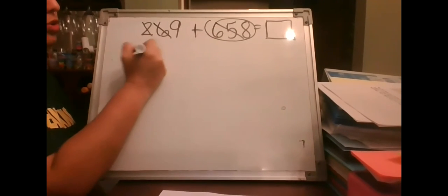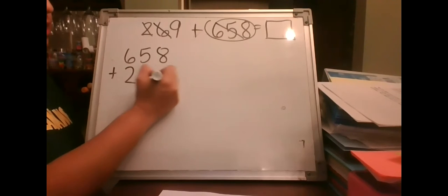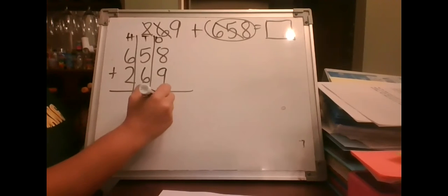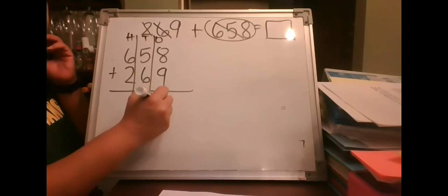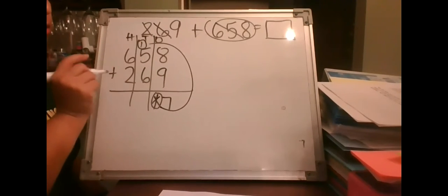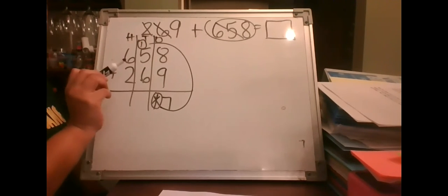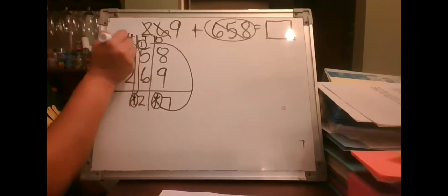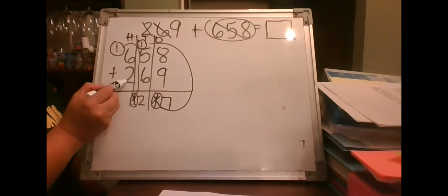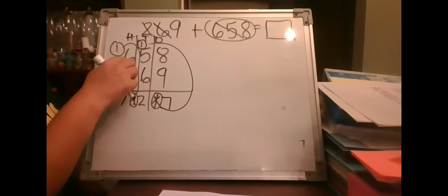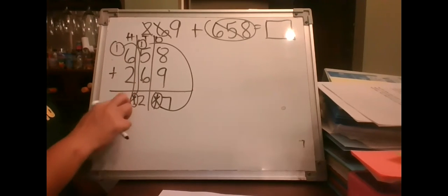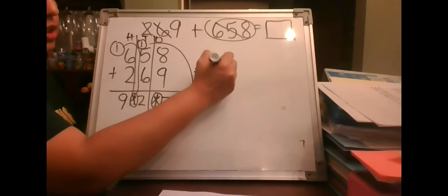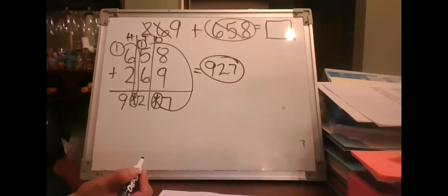Using the algorithm for 658 plus 269: 8 ones plus 9 ones gives 17 ones — we put down 7 and carry the special 10. Five tens plus six tens plus one more is 12 tens — put down 2 and carry the special 100. Six hundreds plus 200 plus 100 gives 900. The answer is 927, the same as before.